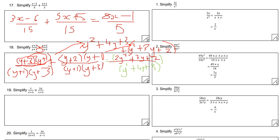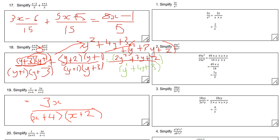Next question: simplify this algebraic fraction involving multiplication. Multiply the top terms together and the bottom terms together. 1 times 3x gives 3x on the top, and (x plus 4) times (x plus 2) on the bottom. You can expand the denominator to get x² plus 6x plus 8 if preferred, but the answer can also be left as 3x over (x plus 4)(x plus 2).